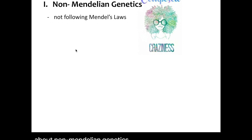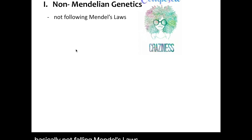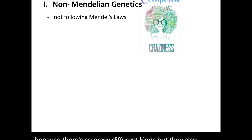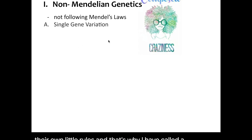In non-Mendelian genetics, it's basically not following Mendel's laws. It's a little bit crazy because there are so many different kinds, but they also have their own little rules, and that's why I have called it Composed Craziness. I split non-Mendelian genetics into five categories.